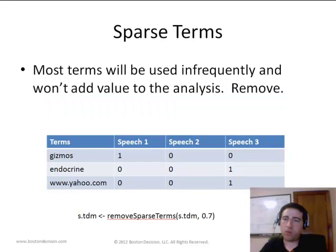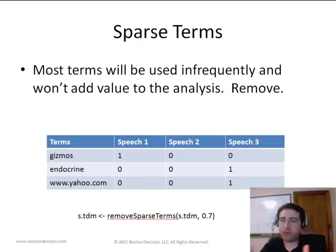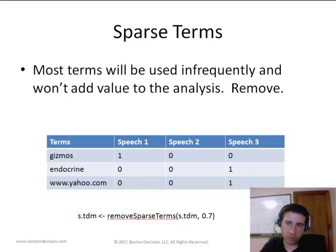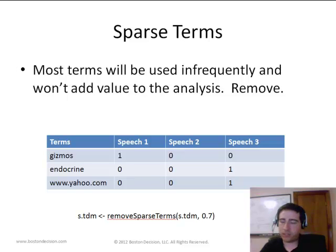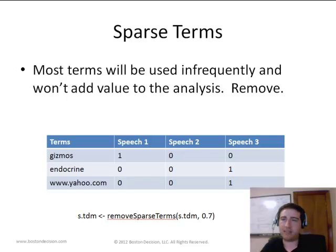Once we have the term document matrix, we often want to eliminate terms that don't appear very often. These are called sparse terms — they might only appear in one document one time, don't give us much information, and are generally noise. We remove them since they slow down our analysis and don't give any insight.